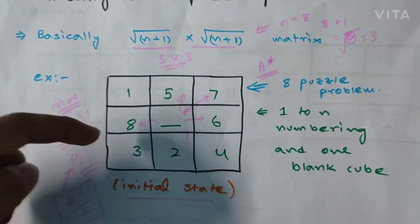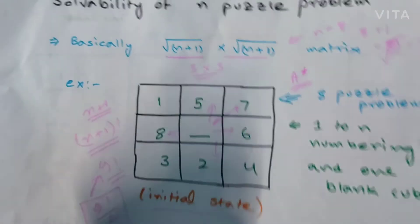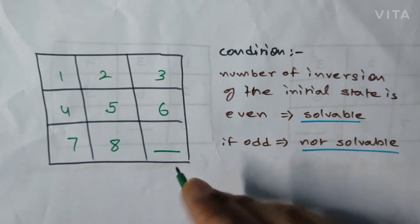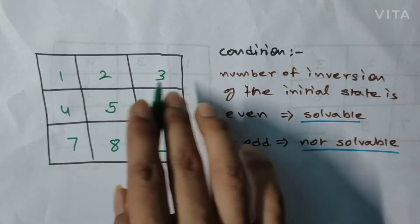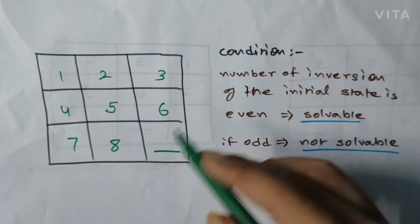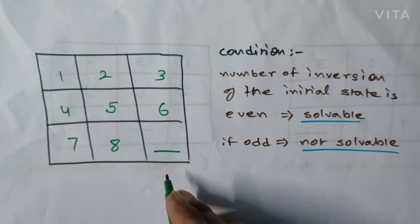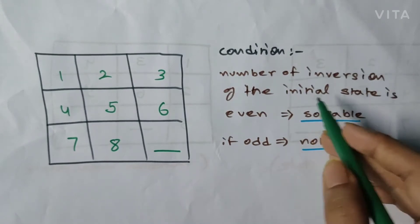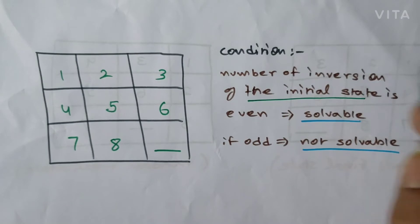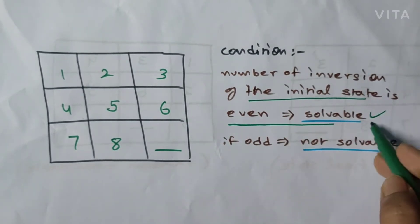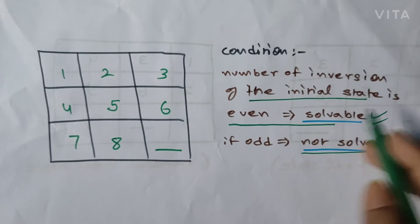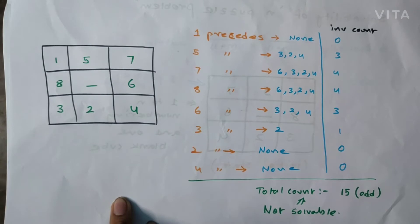This was our initial state and we want to reach the standard goal state — ordered 1, 2, 3, 4, 5, 6, 7, 8 and blank. For this standard goal state, the condition is: we need to calculate the total number of inversions of the initial state. If the inversion count is even, the problem is solvable. If it is odd, the problem is not solvable. This condition is only valid for this standard goal state.